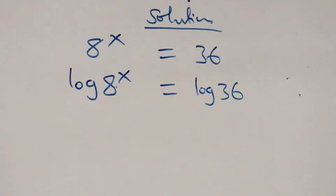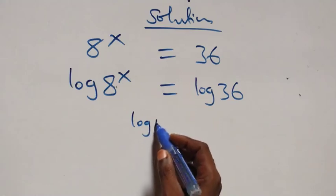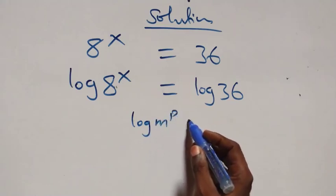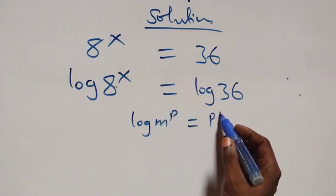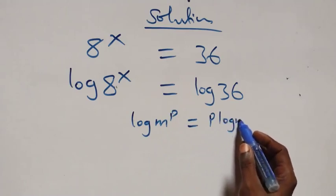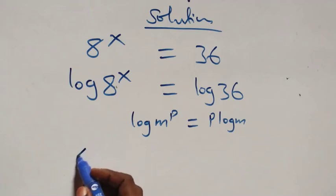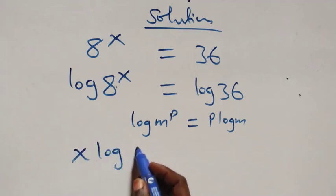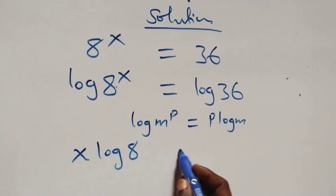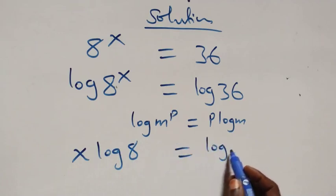From here we apply the power law of logarithm. The power law states that log m raised to power p is the same thing as p log m. That is, what we have here becomes x log 8 equals to log 36.